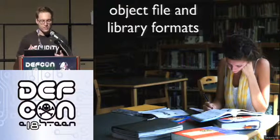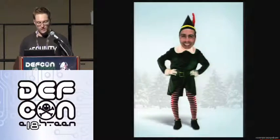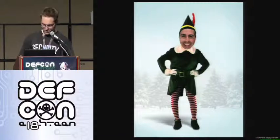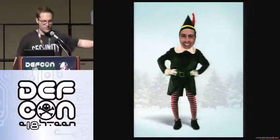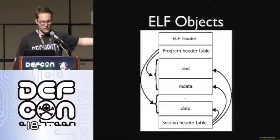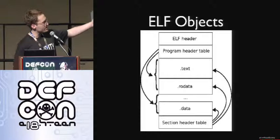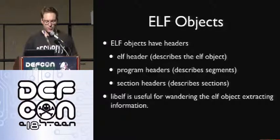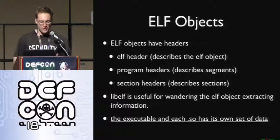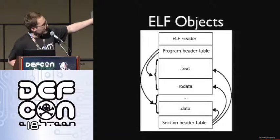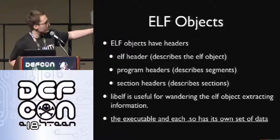The big thing we need to know more about is object file and library formats, and we care about two of them. The first is ELF — the Executable and Linkable Format — chosen as a standard format in the System V ABI for Unix and Unix-like operating systems. It starts with an ELF header, a program header table, various sections like the text section and RO data section, and a section header table at the bottom. The program header table indexes different segments, segments contain sections, and the section header table indexes the sections. You can use a library like libelf to wander through an ELF object extracting useful information. Executables and shared objects each have their own set of data — this set of sections exists for each library your executable loads, which will be important later.